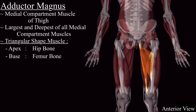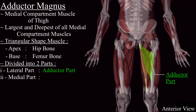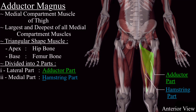This muscle is divided into two parts: the lateral part, often called the adductor part, and the medial part, often called the hamstring part. So adductor magnus muscle has two parts — the adductor part and the hamstring part.